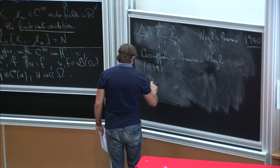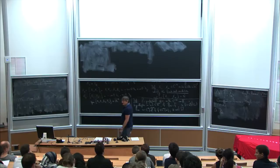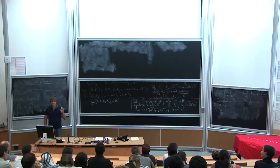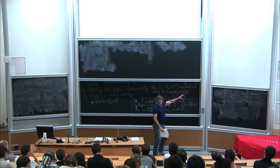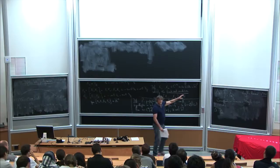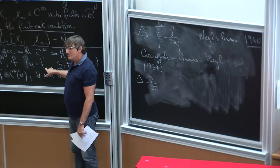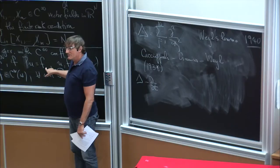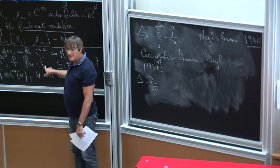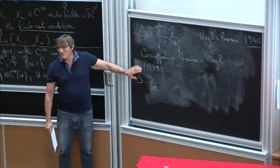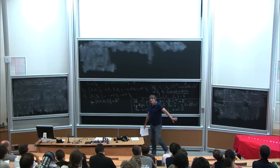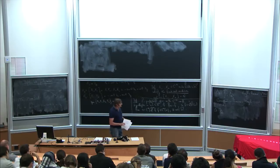Another famous example is the heat equation in Rⁿ⁺¹, which is also hypoelliptic — although with a striking difference from the Laplacian. The Laplacian is real-analytic hypoelliptic: not only does the smoothness property hold when f is C∞, but it also holds when f is real analytic — distributional solutions are real analytic wherever the right-hand side is real analytic. This is true for the Laplacian, but not for the heat equation. The heat equation is hypoelliptic but not real-analytic hypoelliptic, and this difference is quite important.